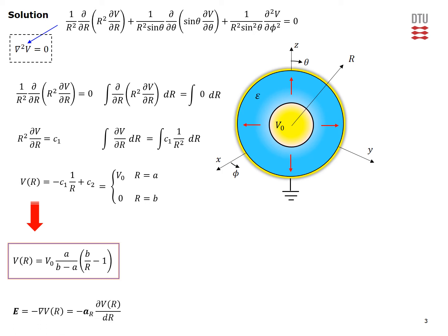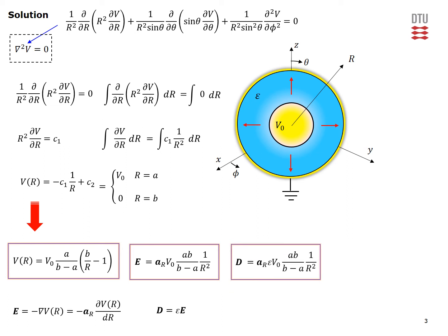When we know the potential, we take its negative gradient — which in this case reduces to a simple radial expression — to arrive at the electric field inside the spherical capacitor. This is a radially directed field with a one-over-r-squared dependence. Since this is a simple material, we apply the constitutive relation to obtain the electric flux density, or D field, inside the dielectric material.